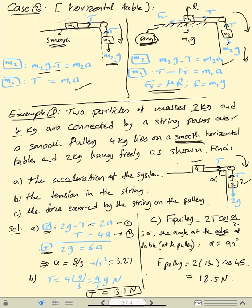Adding the two equations — T cancels — gives 2G equals 6A, so A equals G over 3, approximately 3.27 metres per second squared. Replacing A in equation 2: T equals 4 times G over 3, which is 4G over 3, or in decimals, 13.1 Newtons.